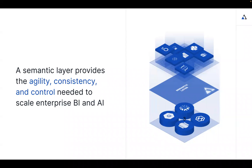A semantic layer provides a logical layer that sits on top of the data, which means anybody can access it with tools they already know, like Excel, Tableau, or Power BI. It allows the enterprise to control who gets to see what data. Governance is built in, as well as that business-friendly view which drives consistency — so revenue is revenue and gross margin is gross margin. You also get agility to introduce new data platforms without expensive pipelines or retraining users.